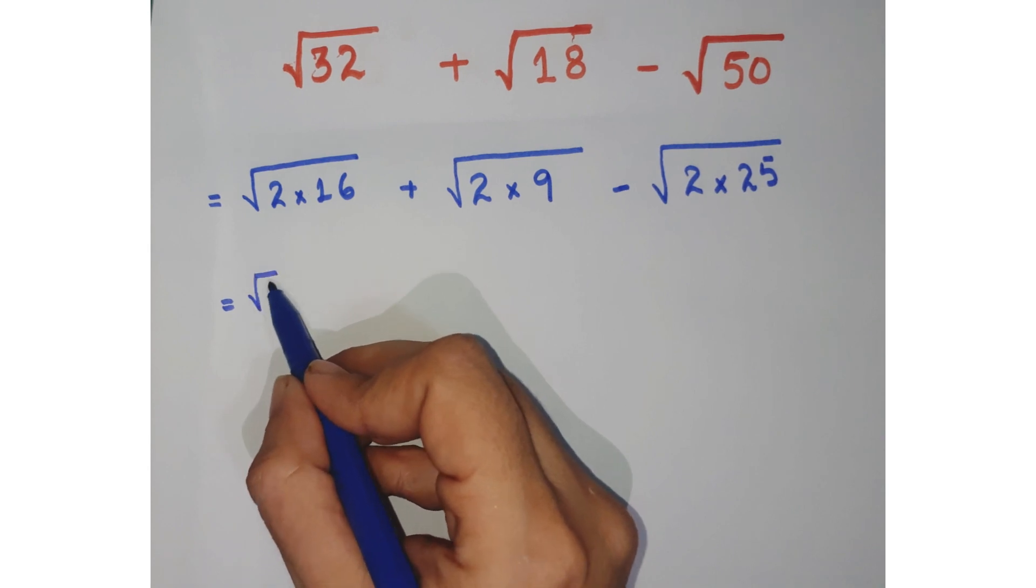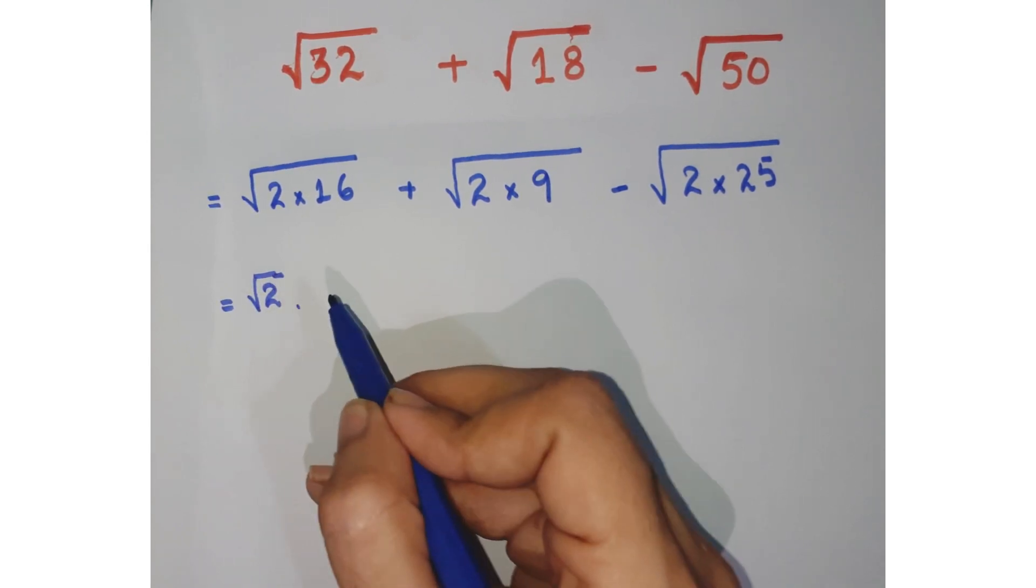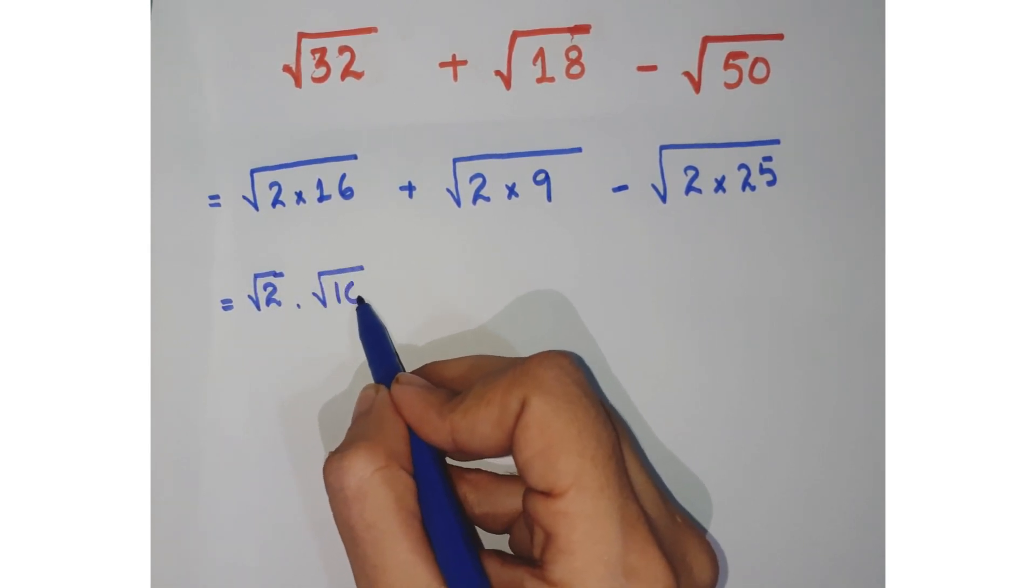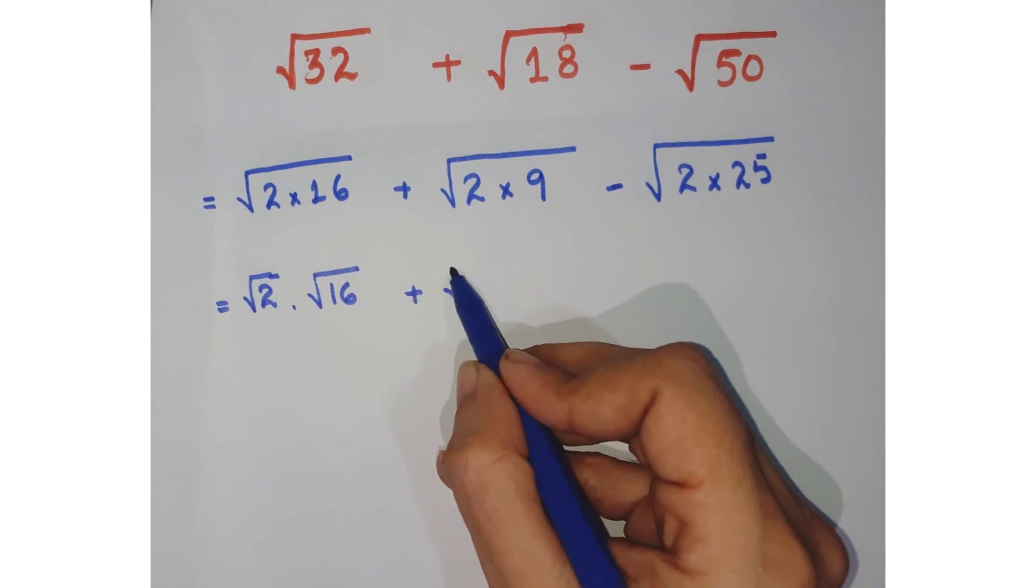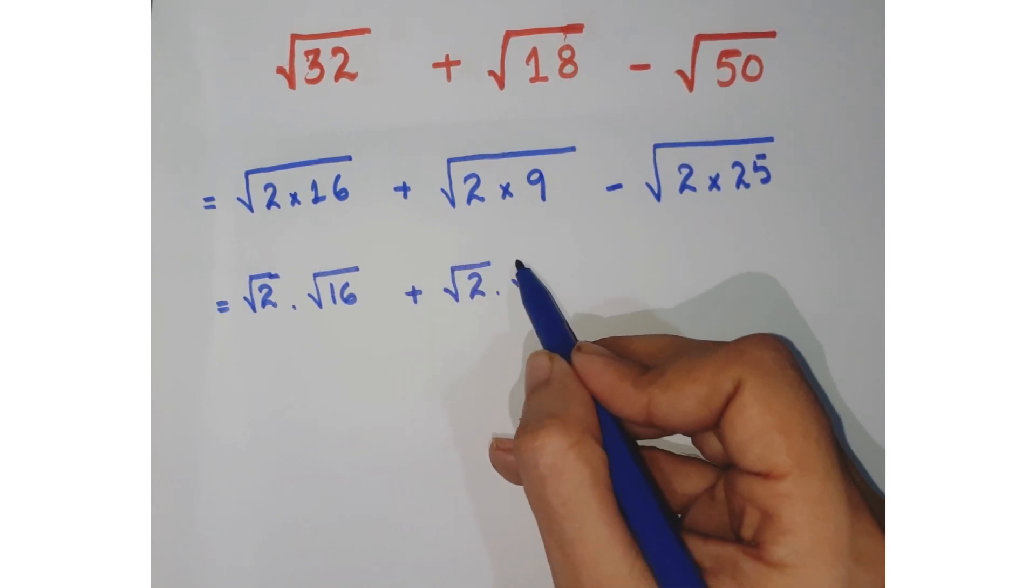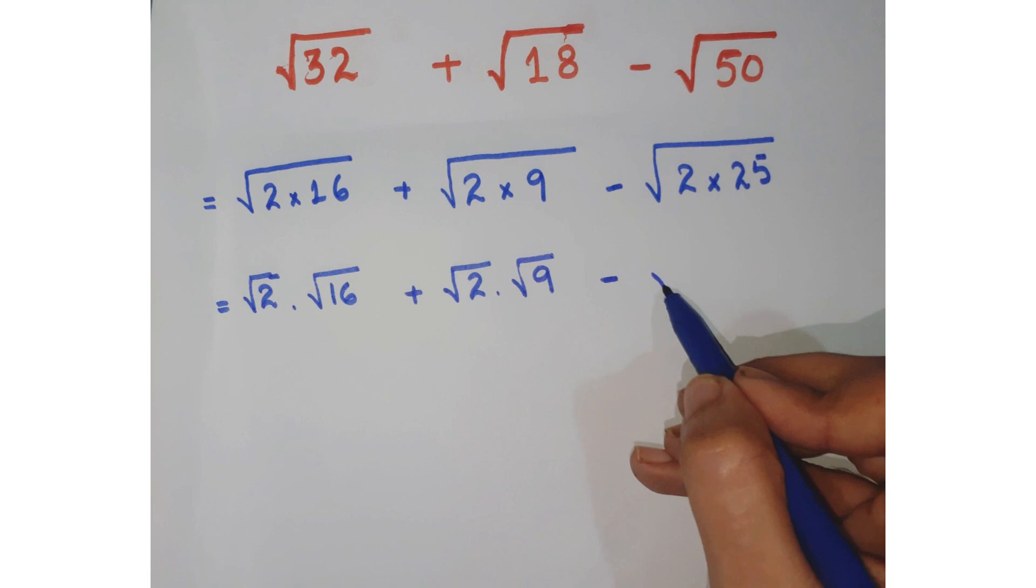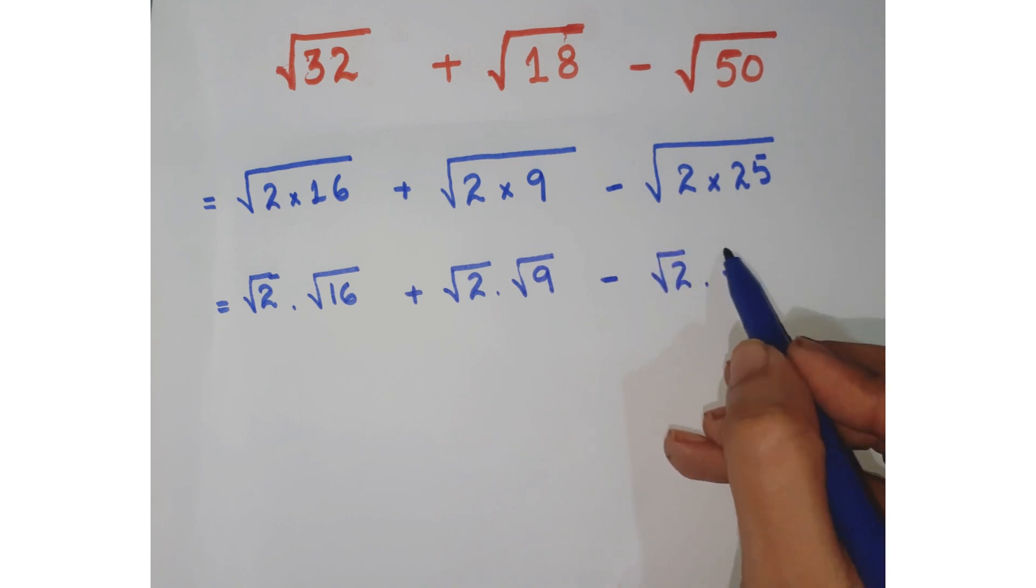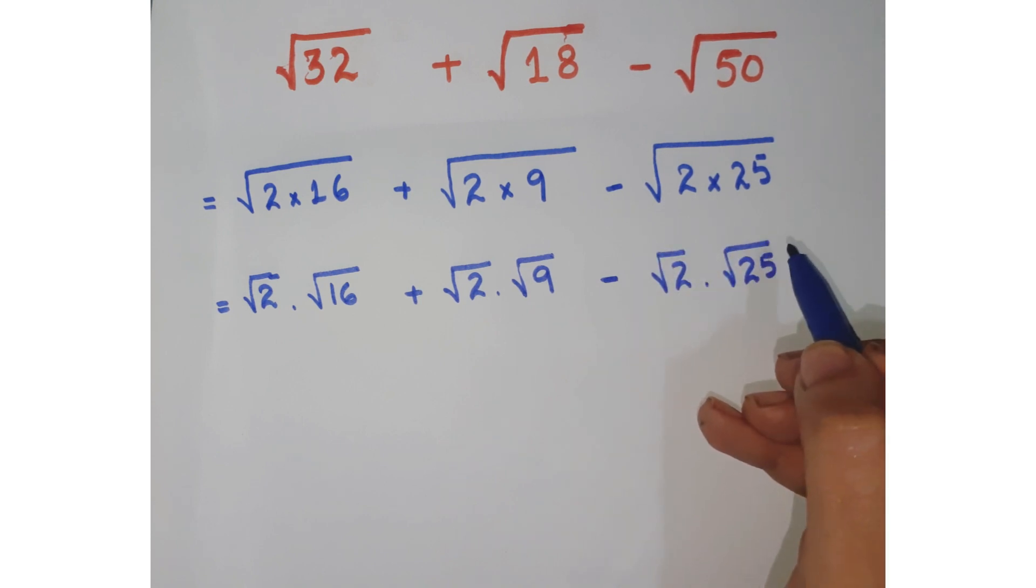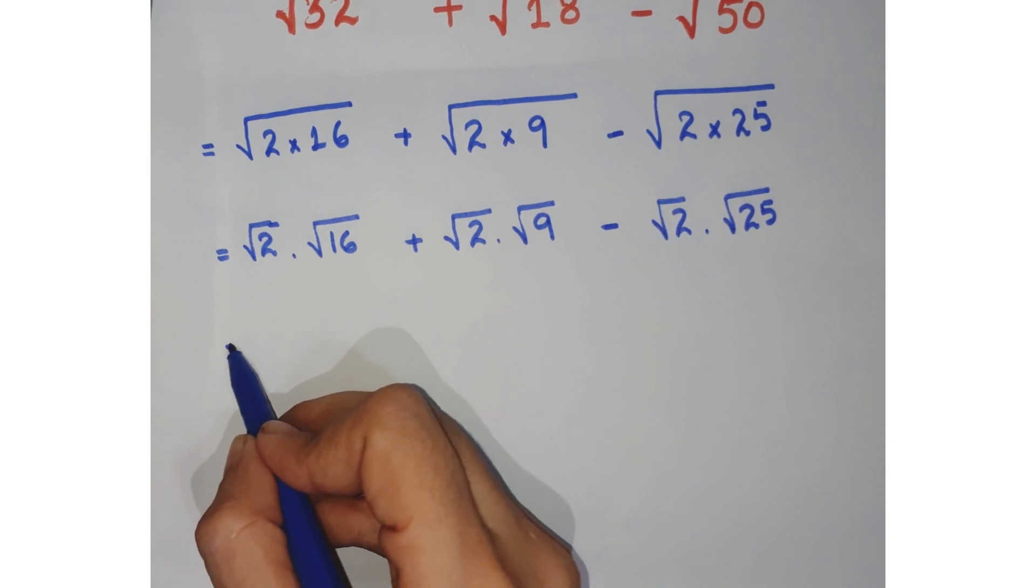Now you can just write it in the separate square roots: that is √2 × √16 + √2 × √9 - √2 × √25.